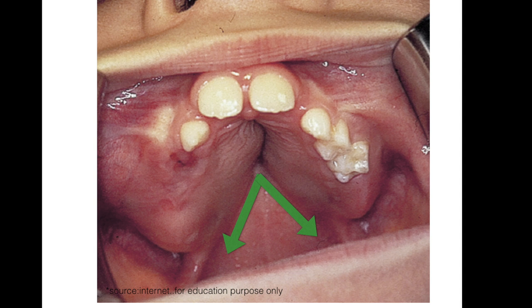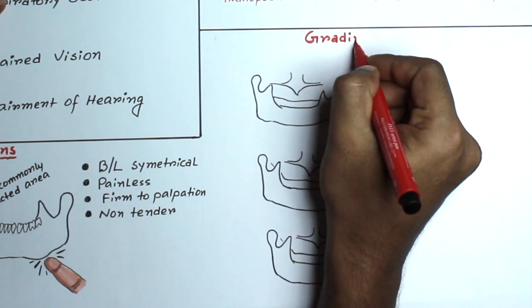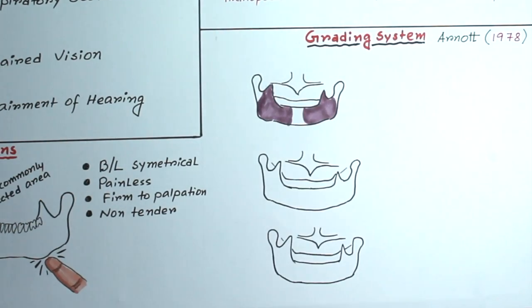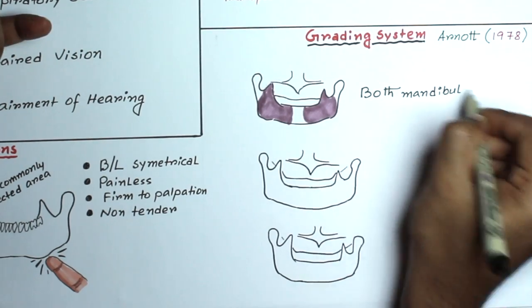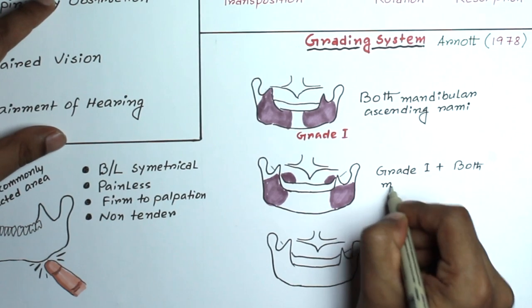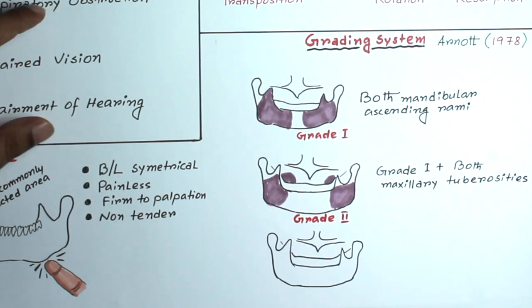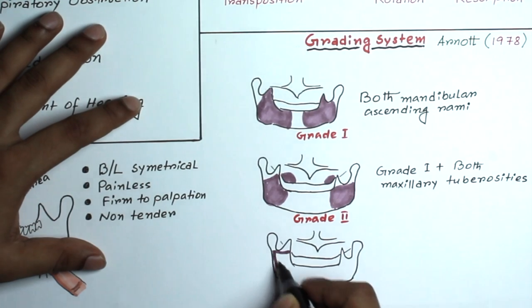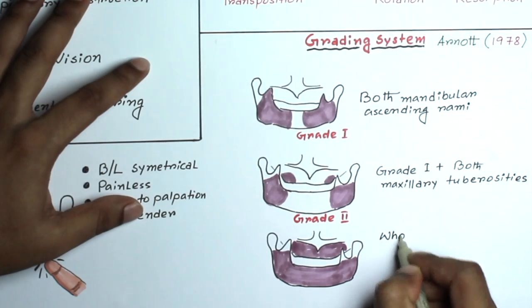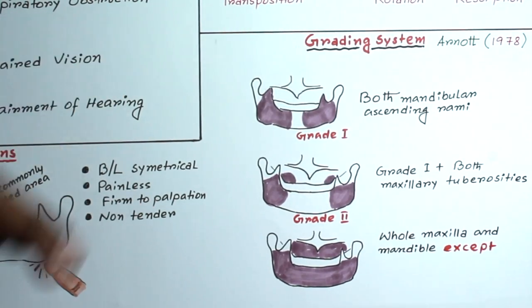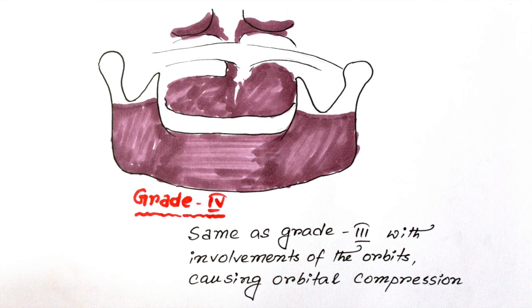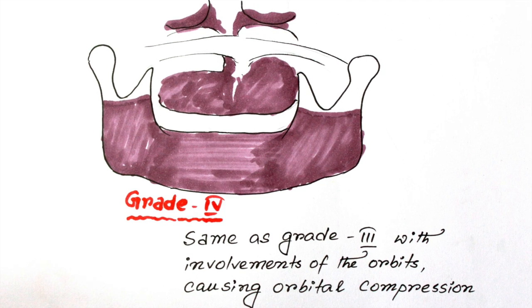In 1978, Arnott gave a grading system. According to him, Grade I is when both mandibular ascending rami are involved. Grade II is Grade I plus both maxillary tuberosities involved. In Grade III, whole maxilla and mandible are involved except the coronoid process and condyles. Grade IV is the same as Grade III with involvement of the orbits, causing orbital compression.